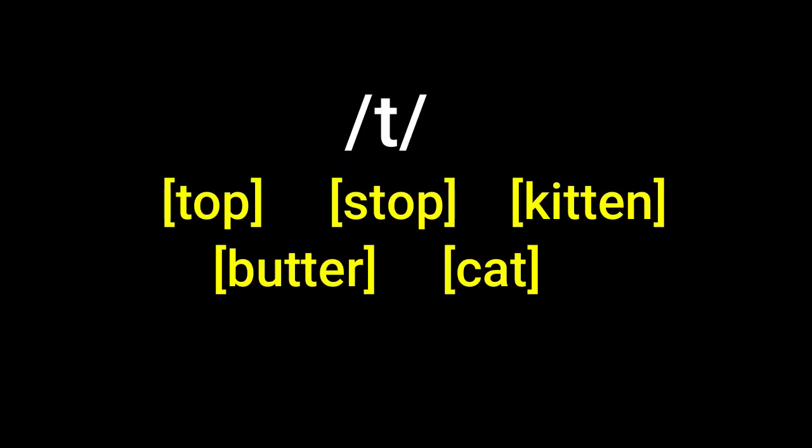To conclude, the words stop, kitten, butter, and cat are aliphones of the same phoneme /t/.